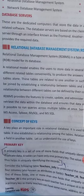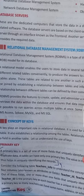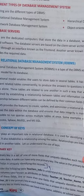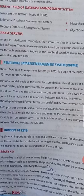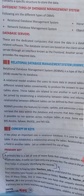Some examples of RDBMS are Oracle, LibreOffice Base, MySQL, MS Access, and MS SQL. The concept of keys: a key plays an important role in a relational database. A key is important for feeding data into a table, and it is used for identifying unique records in a table. It also establishes relationships among tables.